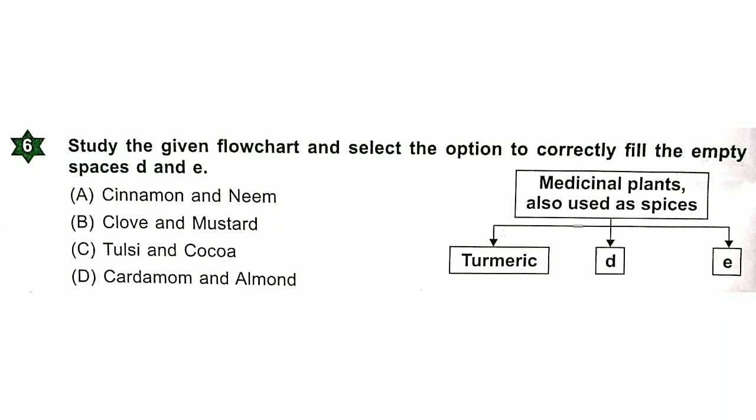Question 6: Study the given flow chart and select the option to correctly fill the empty spaces D and E. Answer is option B.